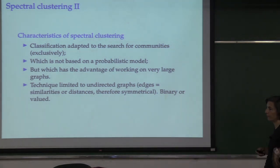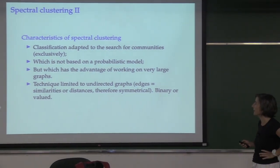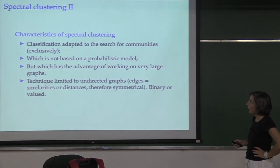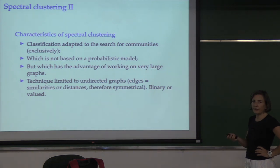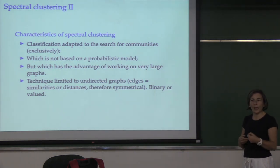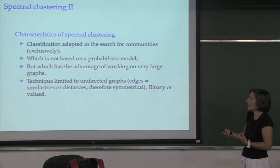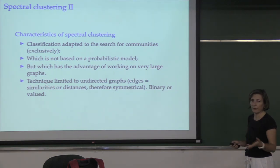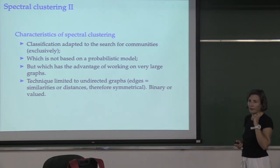Spectral clustering can work on graphs with millions of nodes if implemented correctly using sparse matrices. One problem is that it is limited to undirected graphs — you cannot take into account the direction of edges. However, edges can be binary or valued; you can generalize to positive weights on the graph.